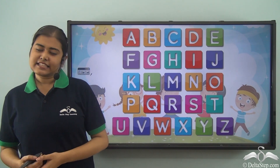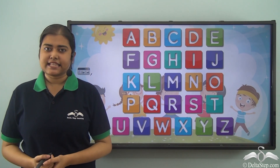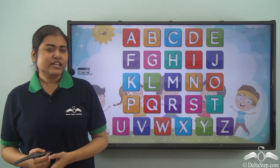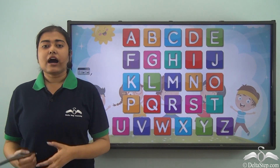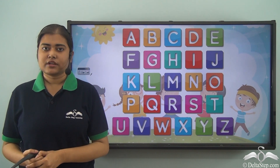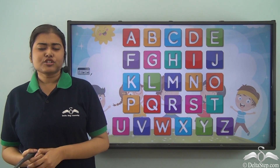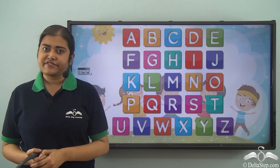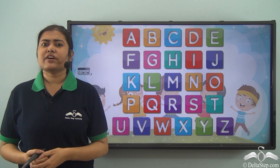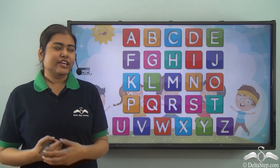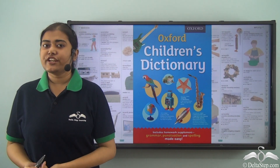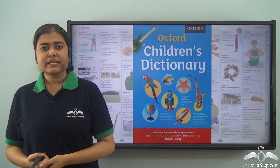We all know that in the English alphabet we have 26 letters, starting from A till Z. Combinations of these letters are used to make the different words we have in the English language. It is not possible for us to know the meaning of every word, so at times when we want to know the meaning of an unknown word, we look up the dictionary. The dictionary has a collection of all the words with their meanings.